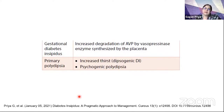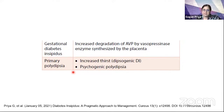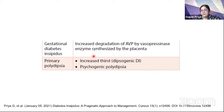During pregnancy, increased production of placental vasopressinase increases the degradation of AVP, so gestational diabetes insipidus may appear in the second trimester or early third trimester and usually resolves after delivery within one to one and a half months. Primary polydipsia is commonly seen with psychiatric diseases — psychogenic polydipsia — but other central disorders affecting the thirst mechanism, dipsogenic DI, can be idiopathic or associated with CNS inflammatory, tumor, or other diseases.